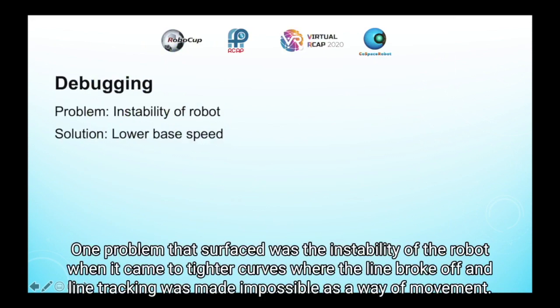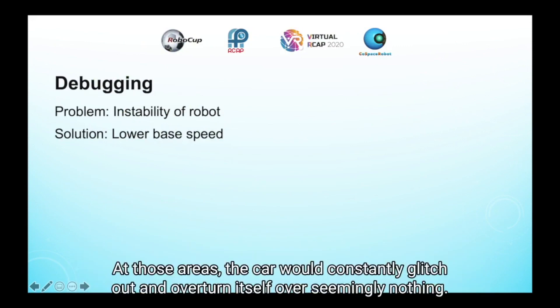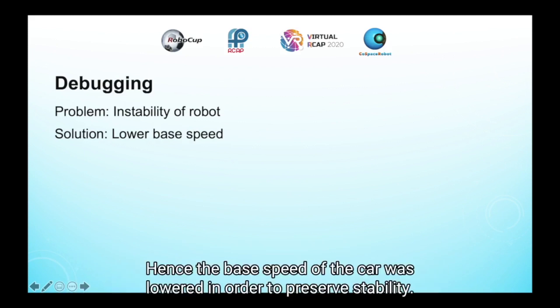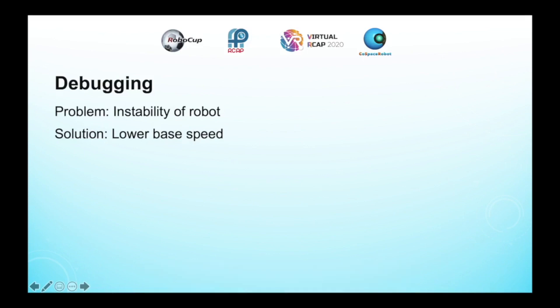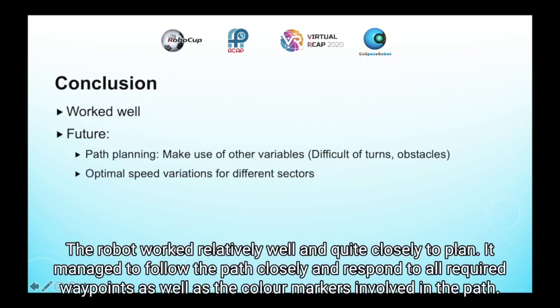One problem that surfaced was the instability of the robot when it came to tighter curves, where the line broke off and line tracking was made impossible as a way of movement. At those areas, the car would constantly glitch up and overturn itself over seemingly nothing. Hence, the base speed of the car was lowered in order to preserve stability. The robot worked relatively well and quite closely to plan. It managed to follow the path closely, and respond to all required waypoints as well as the colour markers involved in the path.